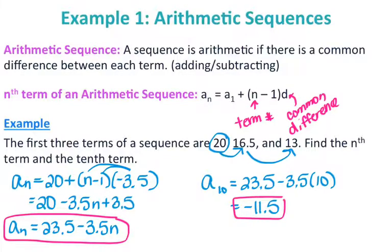Another way to find the 10th term is to continue the sequence from 13, keep subtracting 3.5 until you get to the 10th term — you'd still get negative 11.5. It's a little tedious, but it gives the same answer.